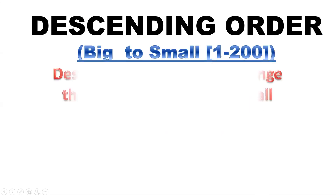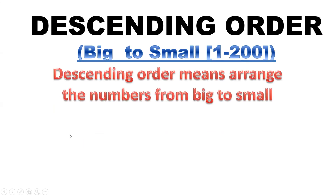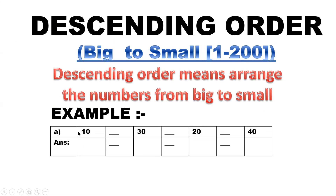Now descending order — descending order means arrange the numbers from big to small. Example: 10, 30, 20, 40. So which is the biggest — 1, 3, 2, or 4? Definitely the biggest is 40. So we write 40, then comes 30, then comes 20, then comes 10.